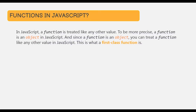In JavaScript, a function is treated like any other value. And to be more precise, a function is an object in JavaScript. And since a function is an object, you can treat a function like any other value in JavaScript. And this is what a first class function is.